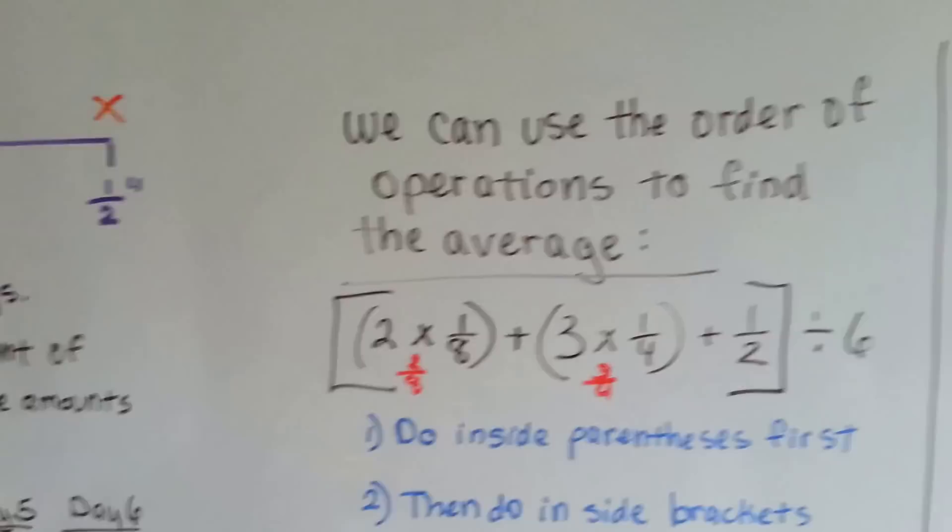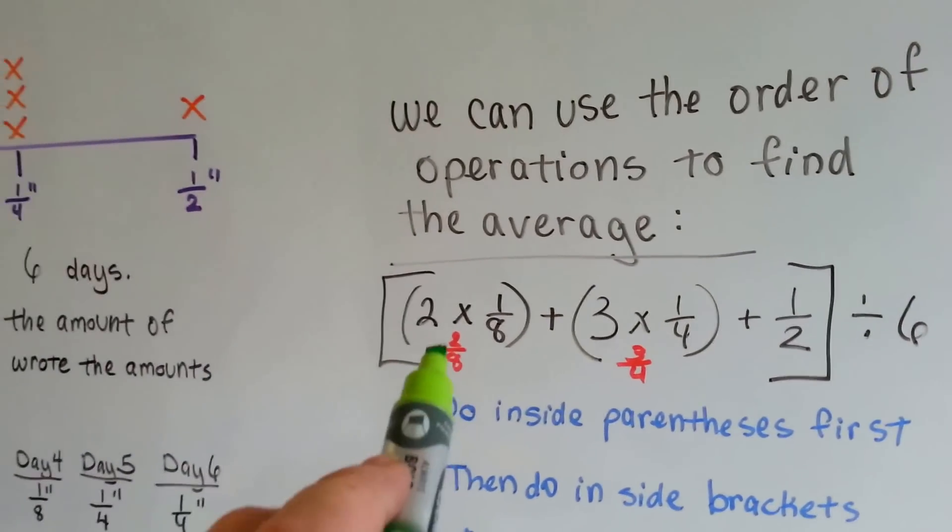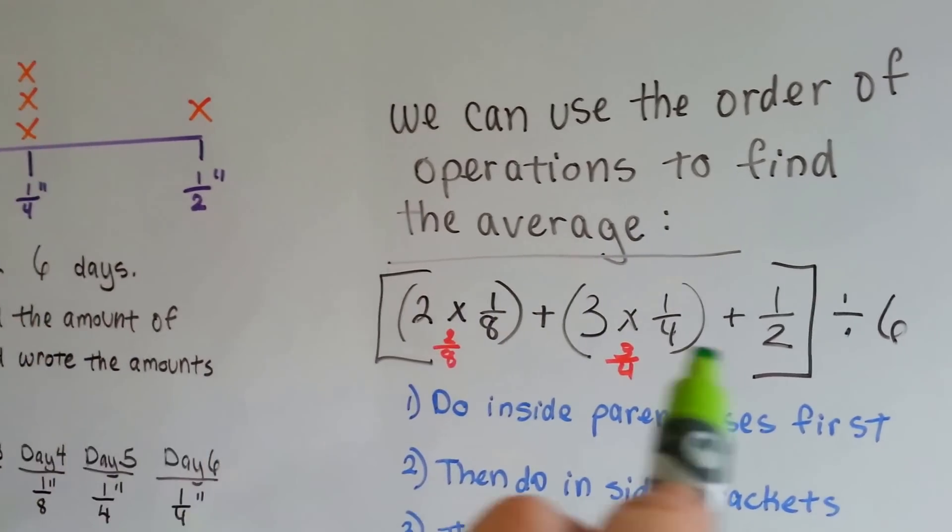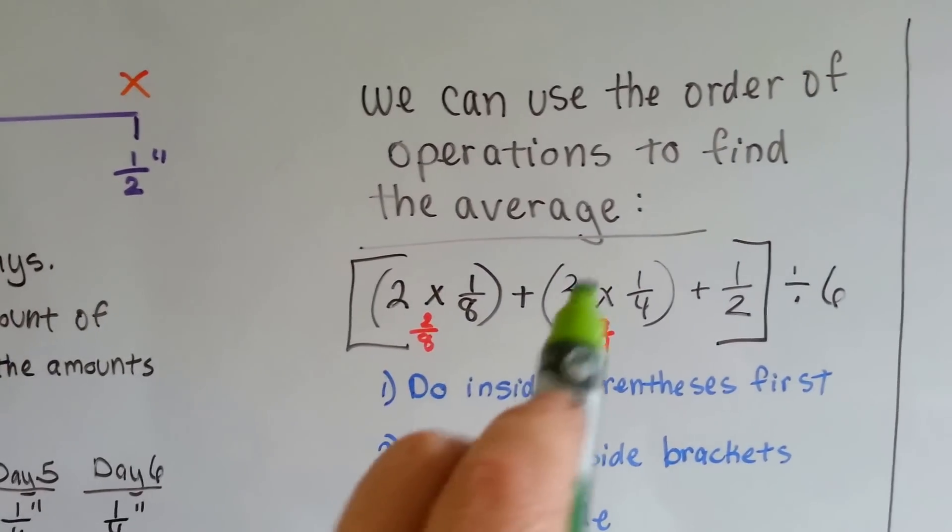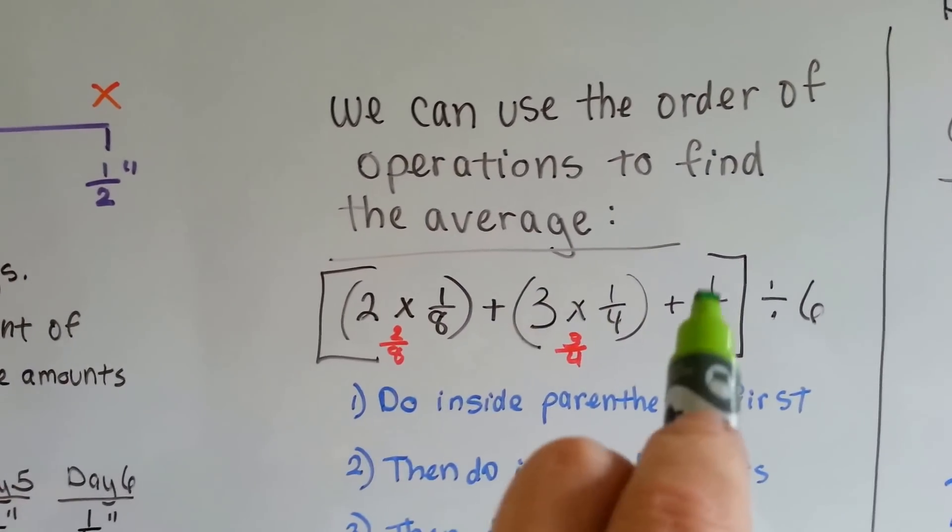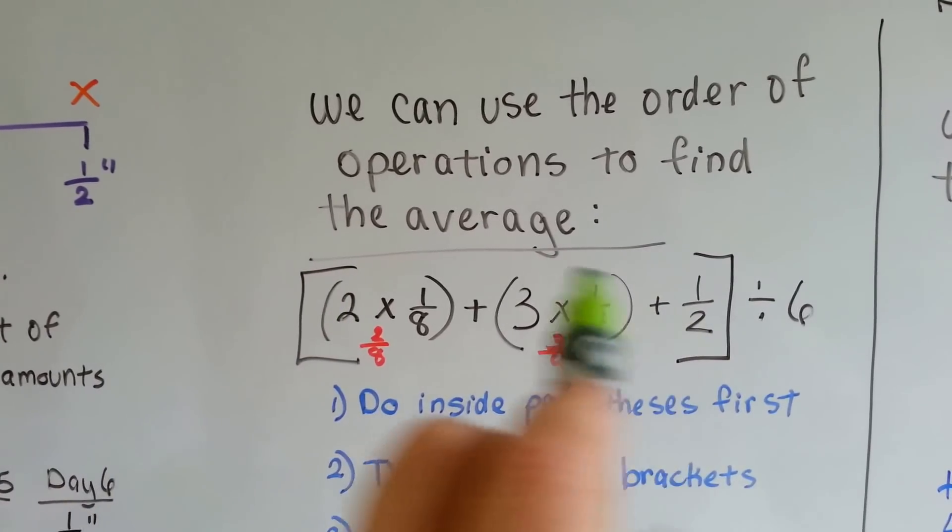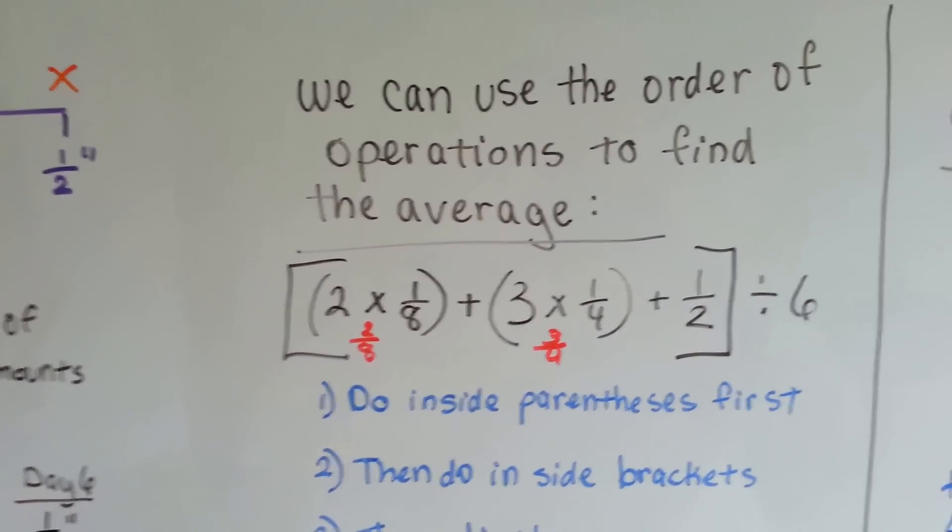We can do that with the order of operations. We know she has two times one-eighth and three times one-fourth plus the half. So, we put these in parentheses to do them first. Then we'll add the half. They're inside brackets because we do this first and then we're going to divide it by six.